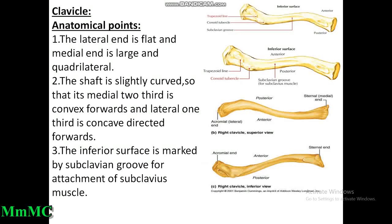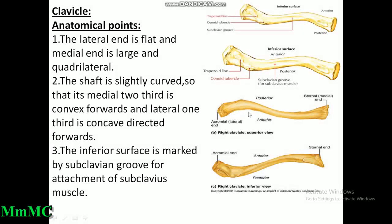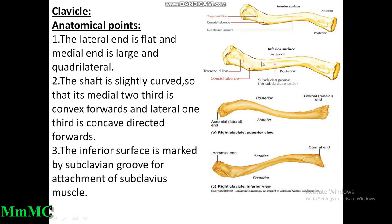Clavicle — anatomical points: the lateral end is flat and the medial end is large and quadrilateral. The shaft is slightly curved so that its medial two-thirds is convex forwards and the lateral one-third is concave forwards. The inferior surface is marked by the subclavian groove, present on the inferior surface of the medial two-thirds of the clavicle, for the attachment of the subclavius muscle.